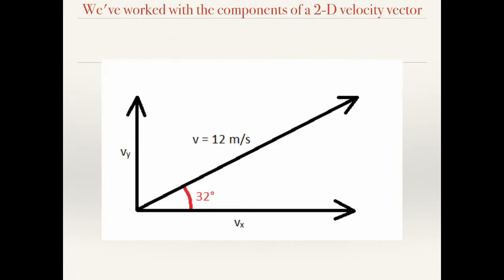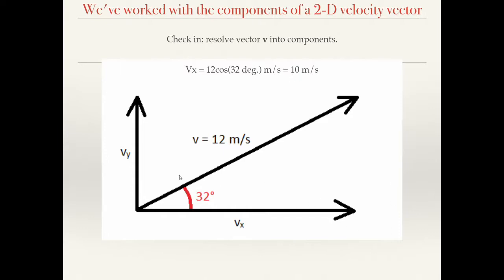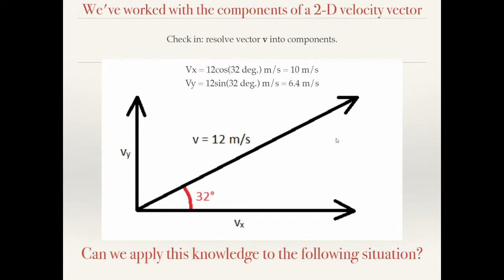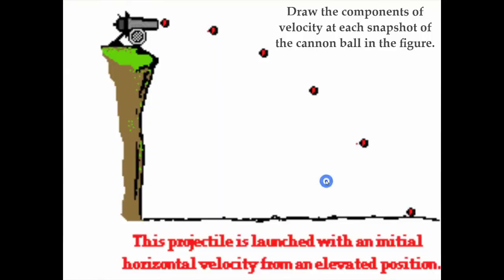Let's review components. We have a velocity vector of 12 meters per second at a 32-degree angle, and I've shown the horizontal and vertical components. The horizontal component is the total magnitude times cosine of 32 degrees, which is about 10 meters per second. The vertical component is 12 meters per second times sine of 32 degrees, which is about 6.4 meters per second — roughly half the total magnitude. You will definitely be resolving vectors into components throughout this chapter.